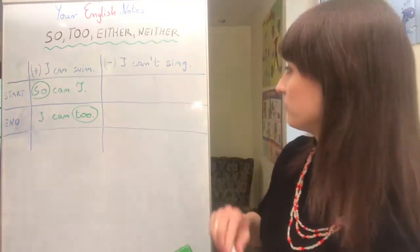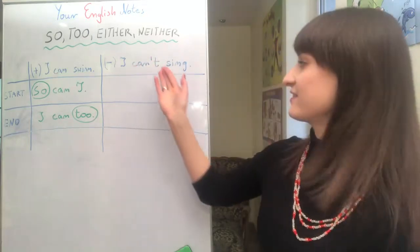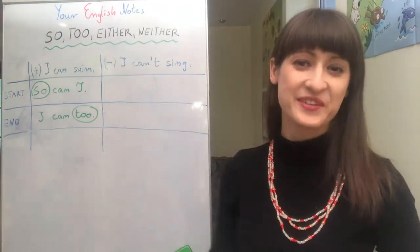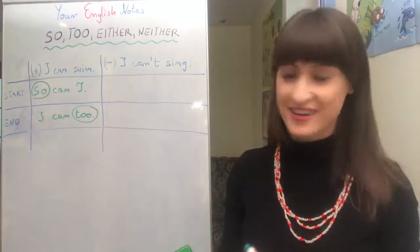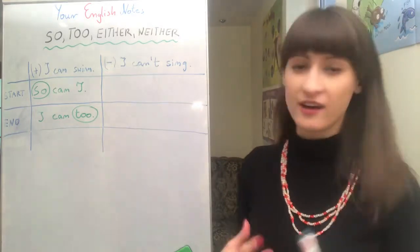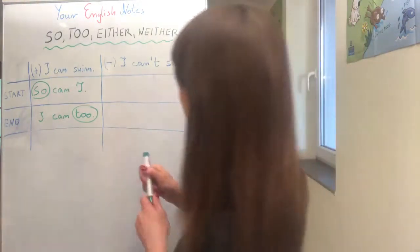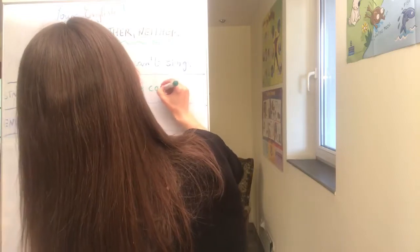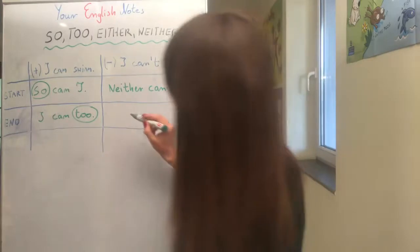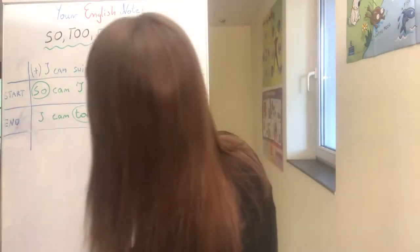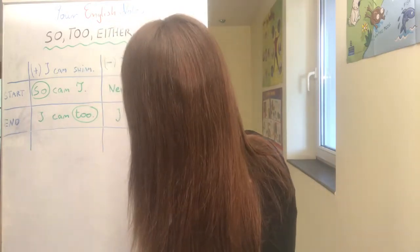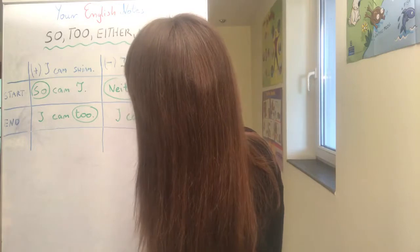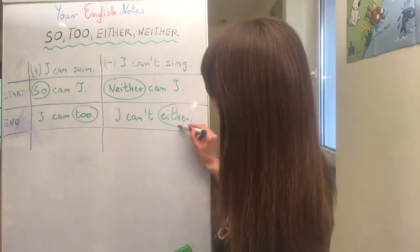But if you have a negative sentence and you want to agree with it, you have to use "either" and "neither." Today I will pronounce them as "either" and "neither." So if someone says a negative sentence like "I can't sing" and I want to agree with them, I can say "neither can I," or I can say "I can't either." So at the beginning of the sentence we use "neither," and at the end of the sentence we use "either."